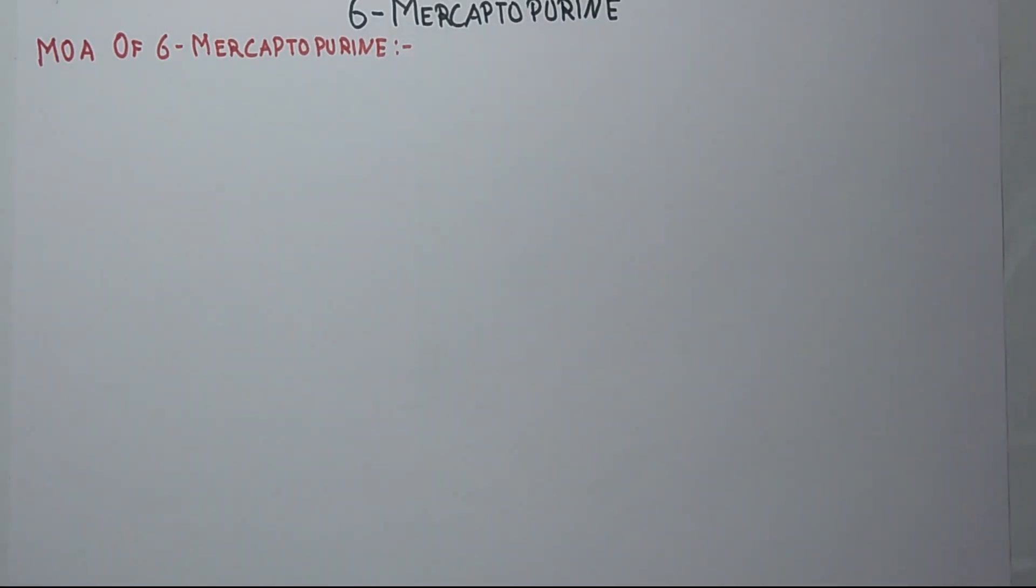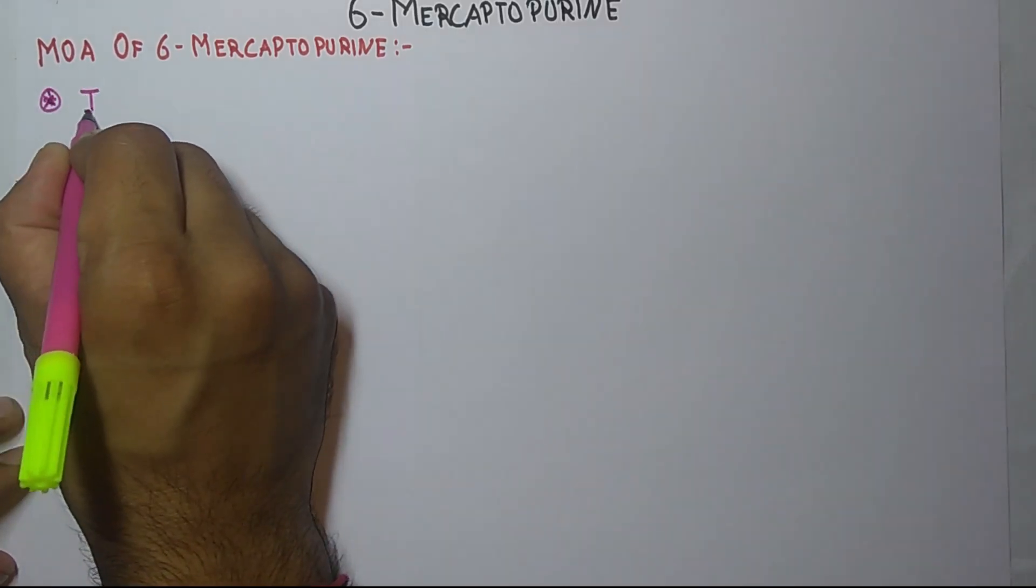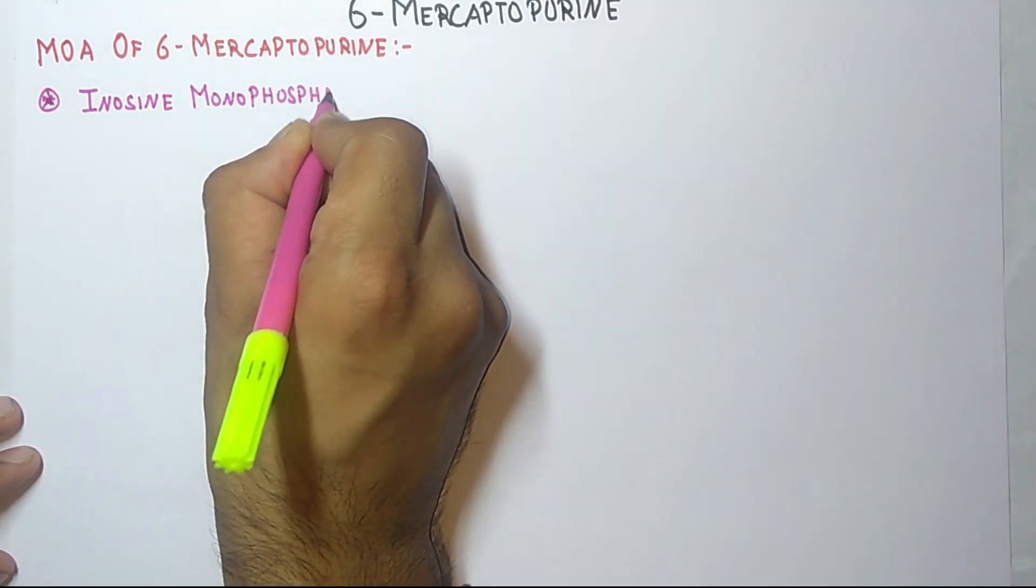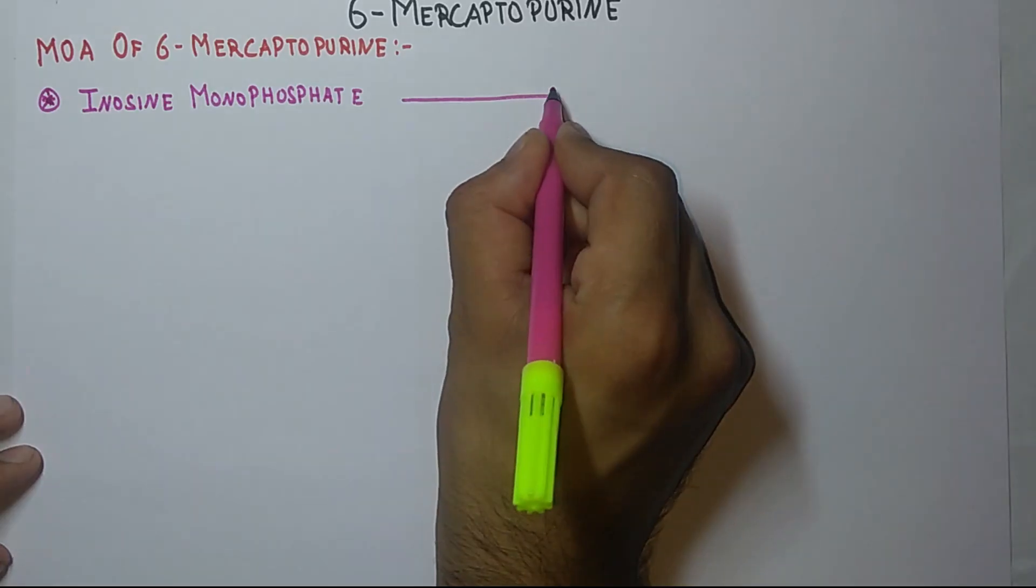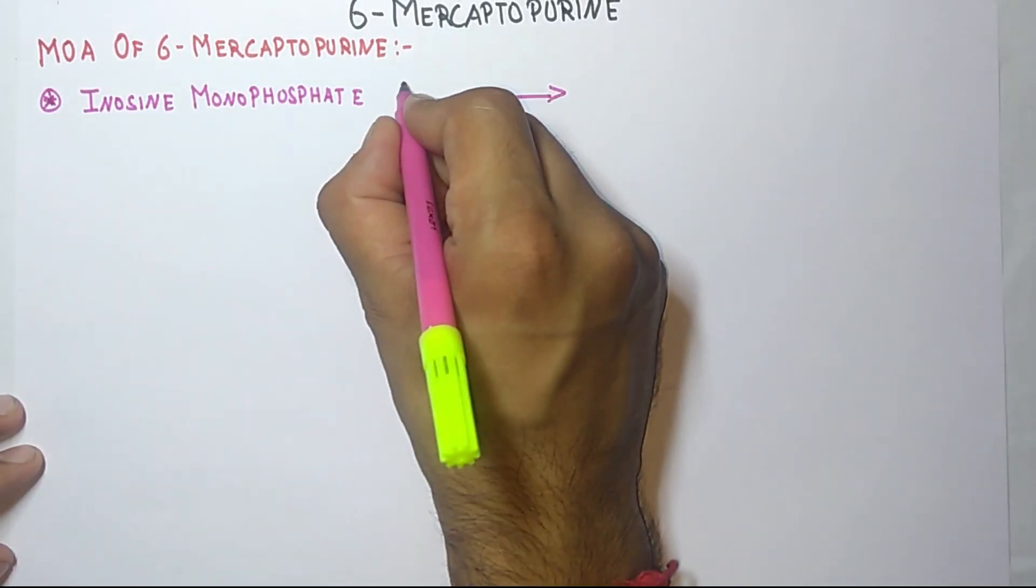Actually, it inhibits the enzyme monoribonucleotide, which inhibits the conversion of inosine monophosphate to adenine and guanine. So let's discuss. In the presence of monoribonucleotide, it is converted into adenine and guanine.